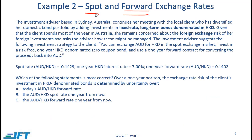From an exam perspective, understanding spot rates and forward rates is extremely important. A spot rate is effectively the rate today — T+2 to be exact — but for all intents and purposes it is the exchange rate in effect today. The forward rate is a rate agreed today for a transaction that will be executed at some point in the future.